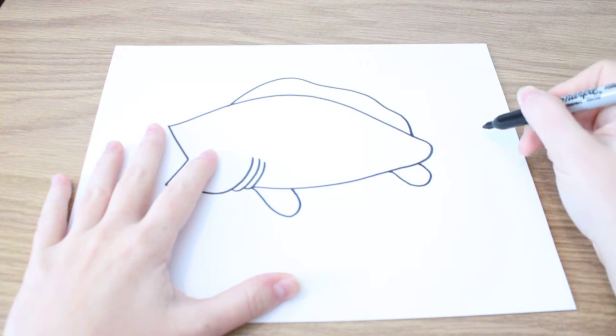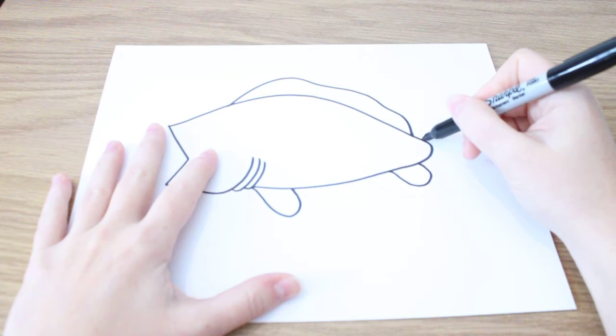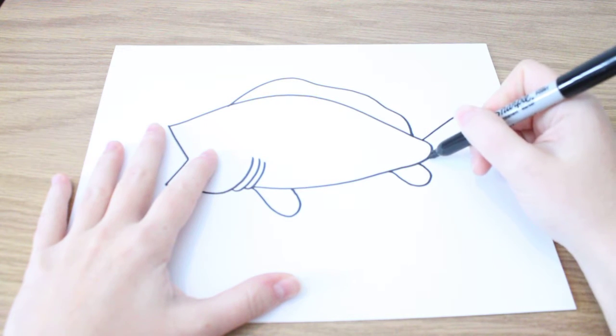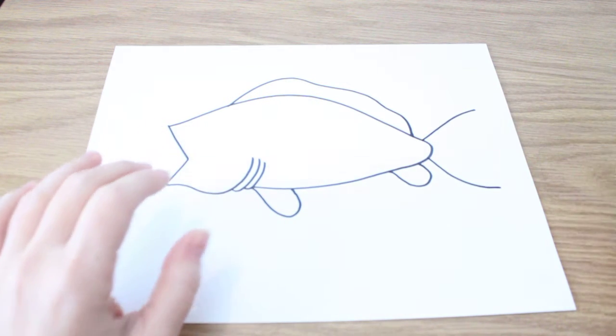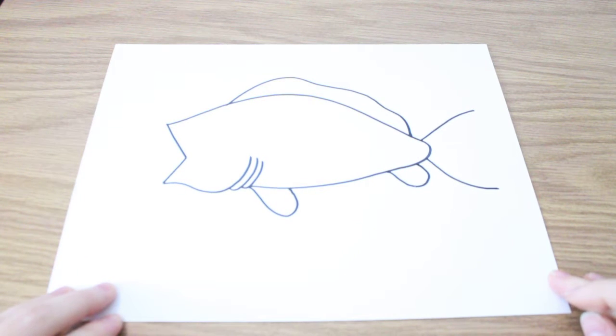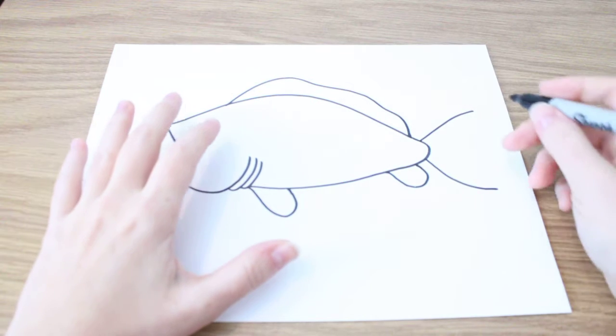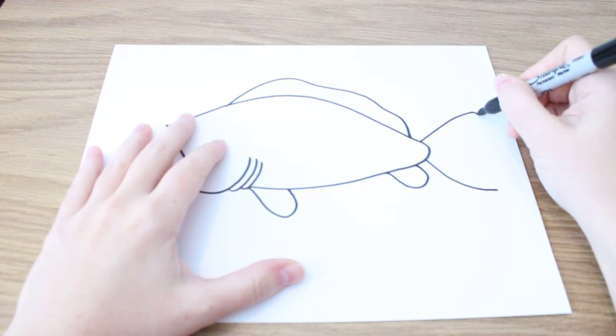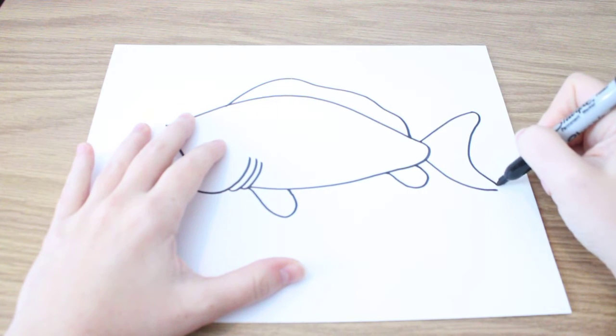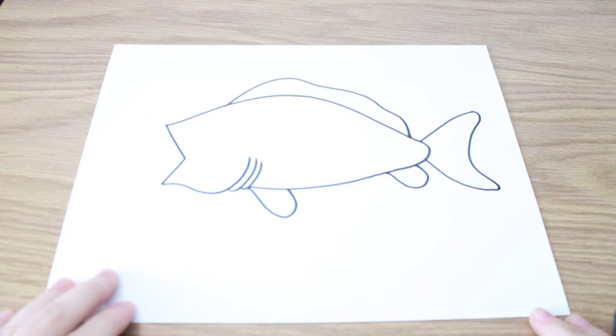Okay, then we're going to make the tail shape. The one that comes out and the one that comes out. And we're going to curve around and finish that tail.